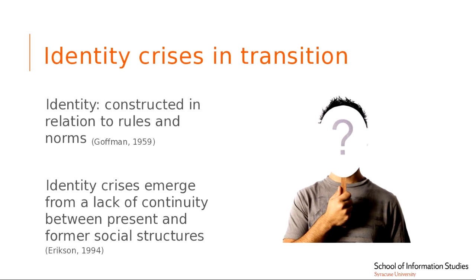Identity, if we draw on Erving Goffman, is constructed in relation to rules and norms — defined through our interactions with others and in the environments we're embedded in. In a transition, identity crises emerge because there's a lack of continuity between former rules and norms and the present ones. Veterans are coming from a highly collectivist and structured military culture — extreme hierarchy, leadership structures, people guided on how to be at all times. As an example, people in the military don't even make their own dentist appointments — they receive a yellow slip telling them when and where to go.